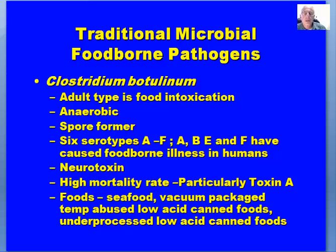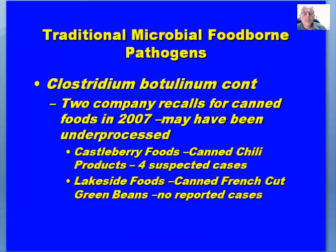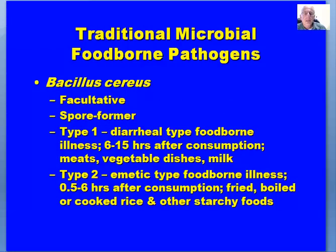Two company recalls for canned foods in 2007 involved under-processed products. Castleberry Foods for canned chili products had four suspected cases, and Lakeside Foods with canned French green beans had no reported cases although they were under-processed. There were also two cases in Aroostook County some years ago associated with a home-processed spaghetti sauce. Bacillus cereus is a facultative spore former with two types: type one is the diarrheal type, occurring six to fifteen hours after consumption of meats, vegetable dishes, and milk.